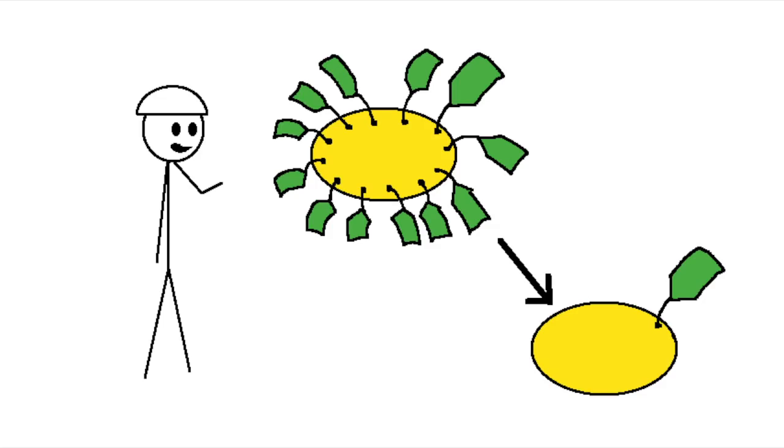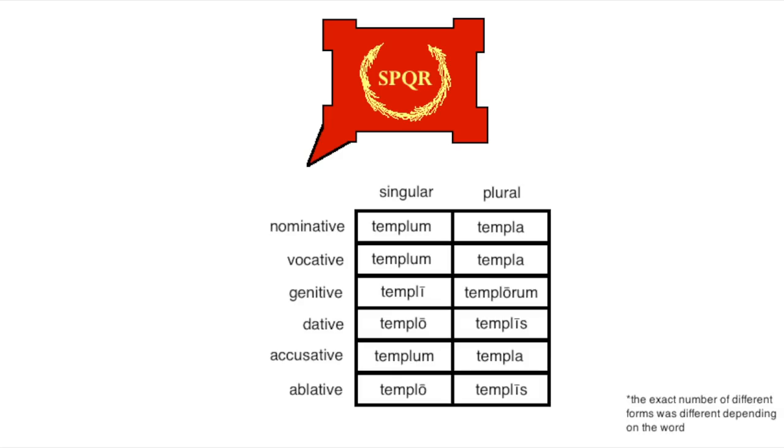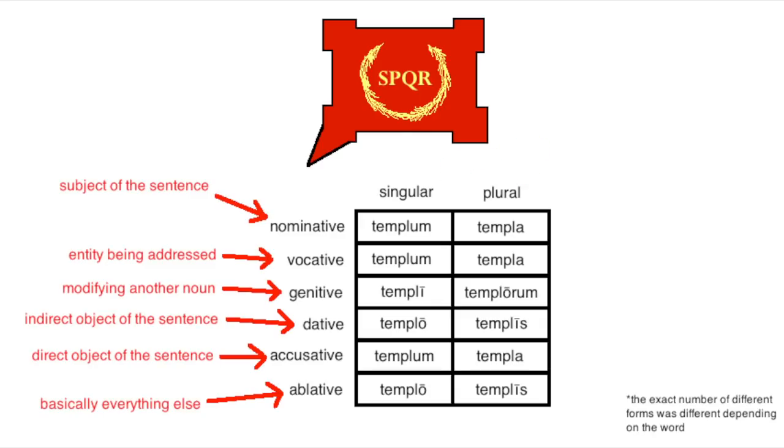Now, it might look at first like the inflectional morphology for a lot of languages has been getting simpler the past couple thousand years. It looks this way because that's exactly what happened. Latin used to have like 12 different forms for each of its nouns depending on whether they were plural or not, but also depending on the role they played in the sentence.